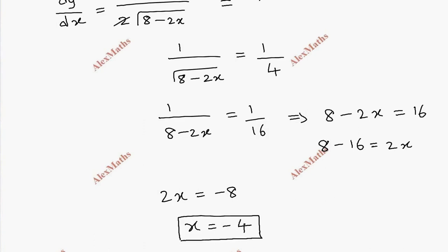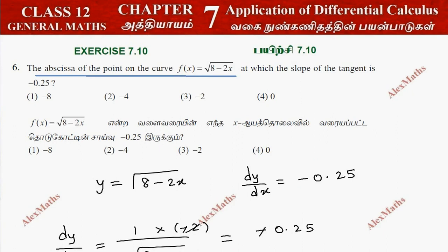So x value equals... -4 is equal to x value. So option 2, -4.